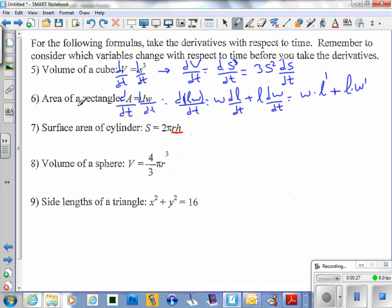For question number 5, question number 8 and π are similar. You have r cubed here, you have s cubed here. They are very similar, while 4/3 π stays as constant.